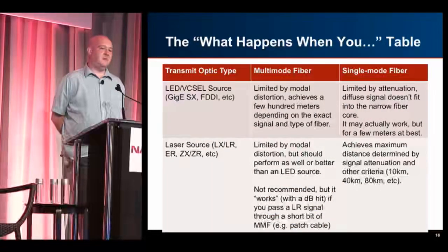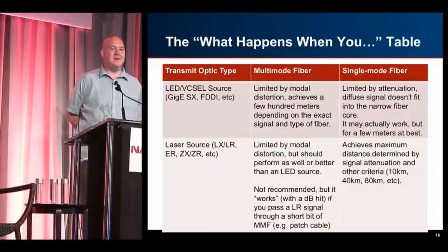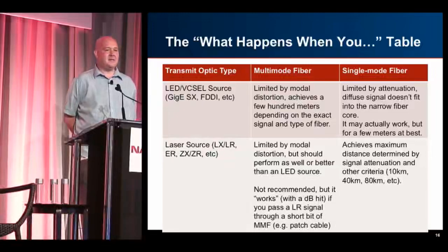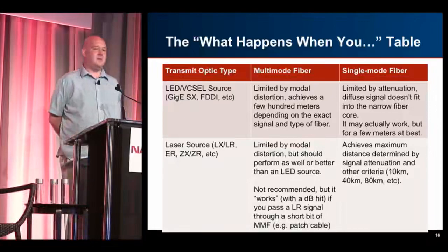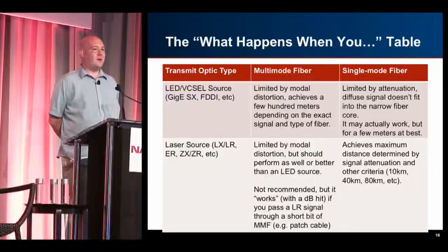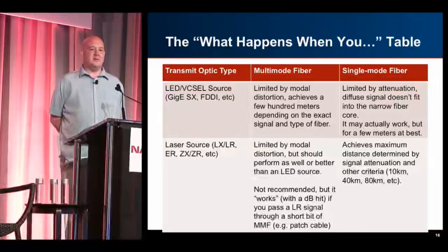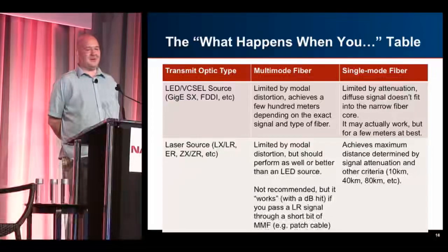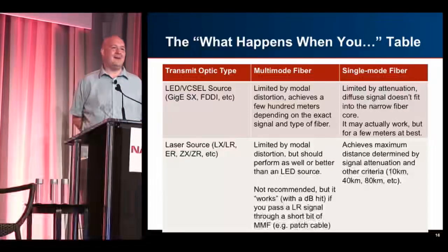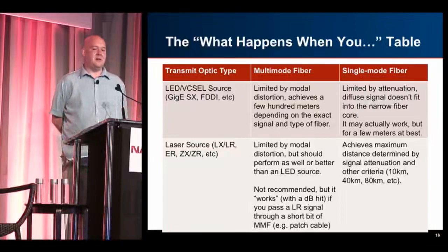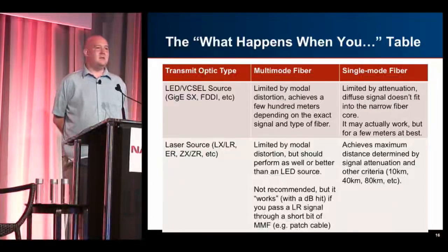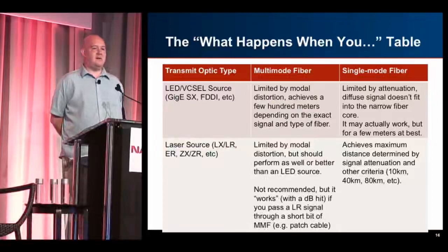Here's a table of what happens with various combinations you shouldn't do. If you take an old LED light source like GigE SX and send it down multi-mode fiber, you get exactly what you'd expect — limited by modal distortion, a few hundred feet. If you send it down single-mode fiber it'll work, but you're blocking about 90% of the signal because of the much smaller core. I've seen people use this for one-meter patch cables in a pinch, but be aware it can break at really bad times.